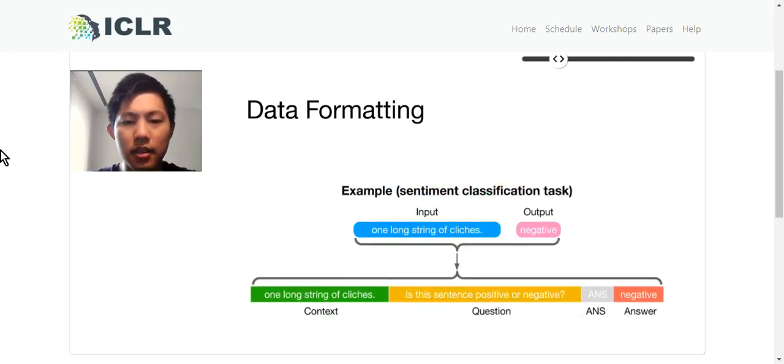For example, in sentiment classification, the input might be 'one long string of cliches,' and the output is 'negative.' After transformation, the context is 'one long string of cliches.' The question is 'is this sentence positive or negative,' followed by a special answer token, and the answer is 'negative.'